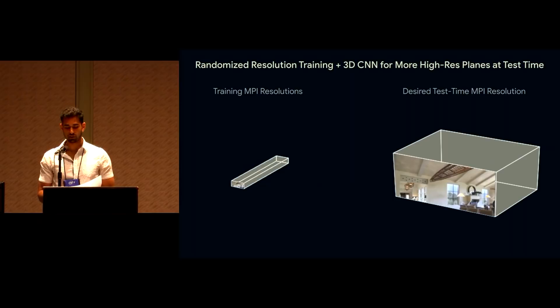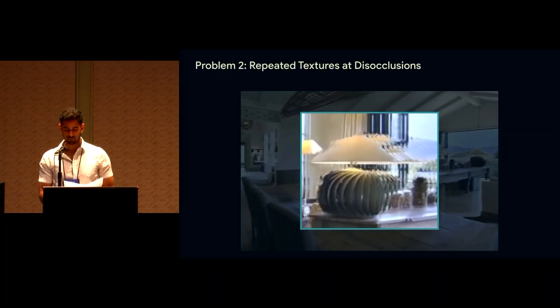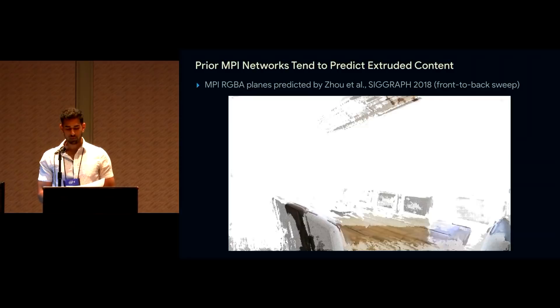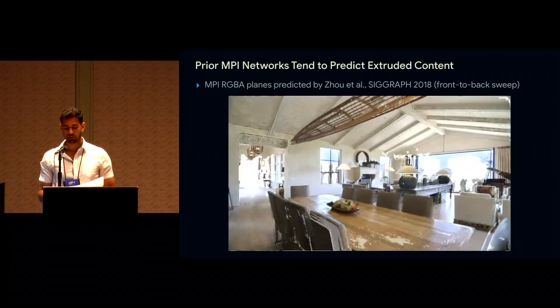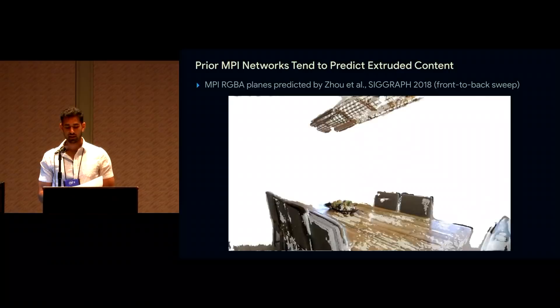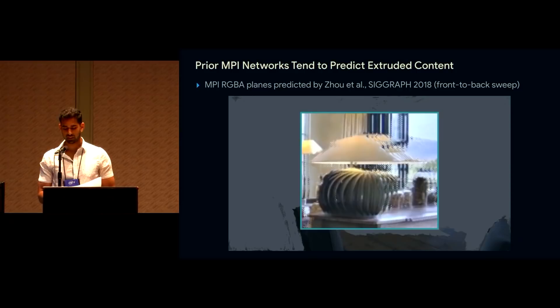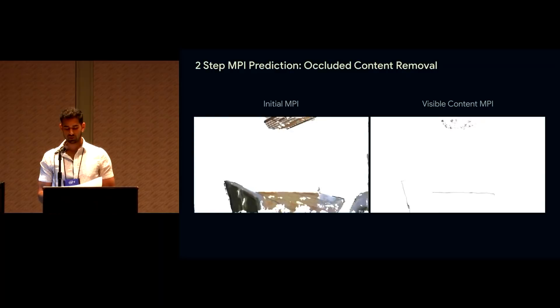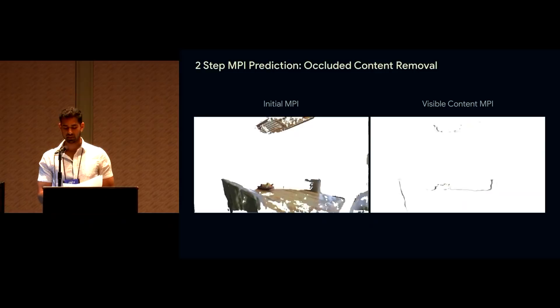We train a 3D network to predict more high-resolution MPI planes than can fit on GPU during training by randomly sampling spatial and disparity resolutions that fit, so the network can learn to use a receptive field equal to the maximum size in each dimension at test time. Now let's talk about the problem where disocclusions contain repeated copies of foreground textures. We might expect each MPI plane to only contain content present at that depth, but training with view supervision learns to predict MPIs that copy foreground content from their initial depth all the way back to the furthest plane as we see in this front-to-back sweep of MPI planes.